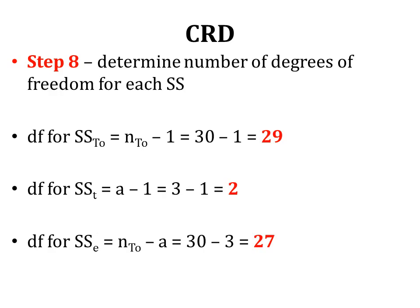Step eight is to calculate degrees of freedom. df_Total = N_total − 1 = 30 − 1 = 29. df_Treatment = a − 1 = 3 − 1 = 2. df_Error = N_total − a = 30 − 3 = 27. We can also verify df_Error by summing individual df values: (10−1) + (10−1) + (10−1) = 9 + 9 + 9 = 27.